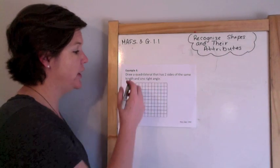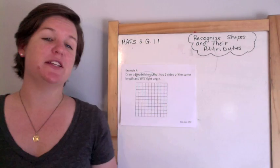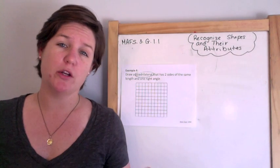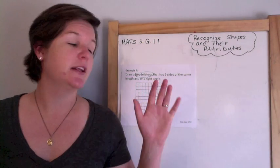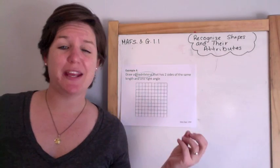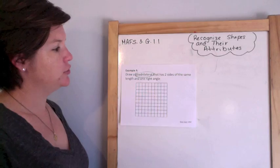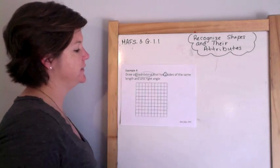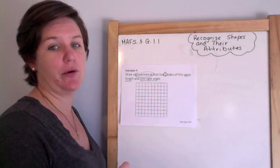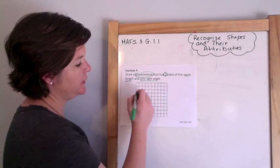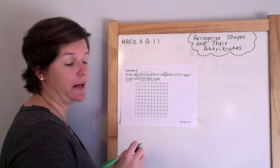Example four. Draw a quadrilateral, and just to be clear, this standard is mostly talking about quadrilaterals. You may need to know what a triangle is and what a pentagon and a hexagon and an octagon to eliminate answers, but the focal point is more on quadrilaterals. So, draw a quadrilateral that has two sides the same length and one right angle.